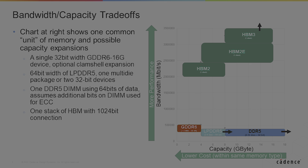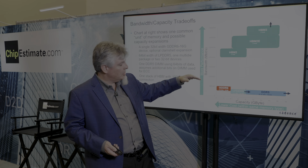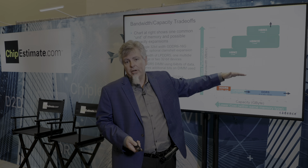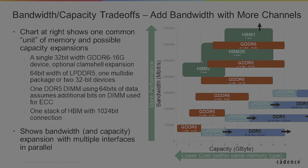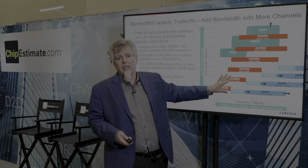If we look at HBM, you may find that it goes way up the chart. HBM can provide a huge amount of bandwidth at a relatively high cost compared to the other memories, so it exists in a slightly different solution space. One thing we can do is add capacity by adding multiple different channels. As we add channels of GDDR6, LPDDR5, or DDR5, we step up the chart in increments, and you can quickly find yourself providing more bandwidth and capacity with GDDR6, even eclipsing a single HBM interface.